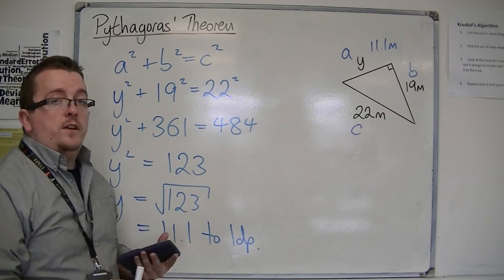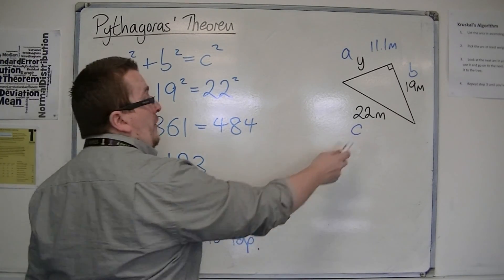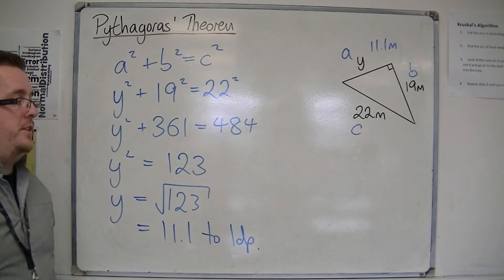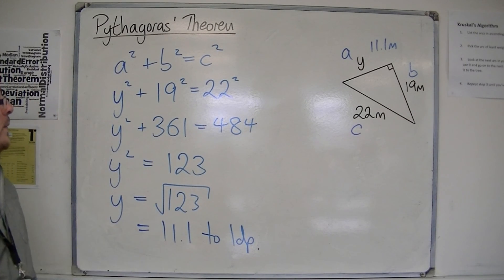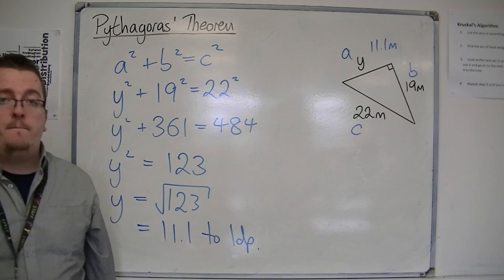And as expected, we should be getting a number that is less than the 22, because that's the hypotenuse already. And that's how we can use Pythagoras to work out that missing side.